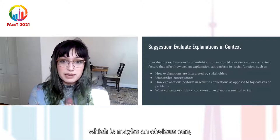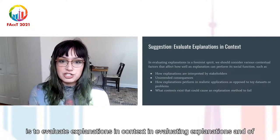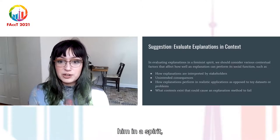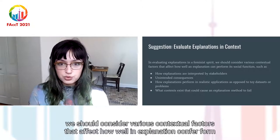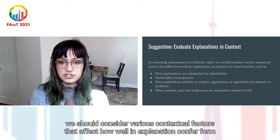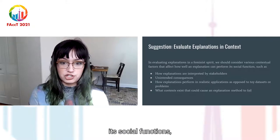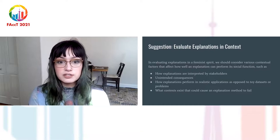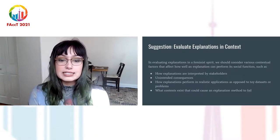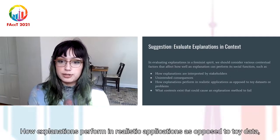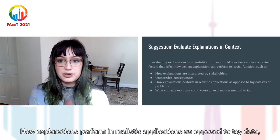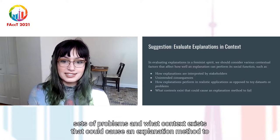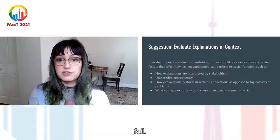Another suggestion, which is maybe an obvious one, is to evaluate explanations in context. In evaluating explanations in a feminist spirit, we should consider various contextual factors that affect how well an explanation can perform its social functions, such as how explanations are interpreted by stakeholders, unintended consequences, how explanations perform in realistic applications as opposed to toy datasets, and what contexts exist that could cause an explanation method to fail.